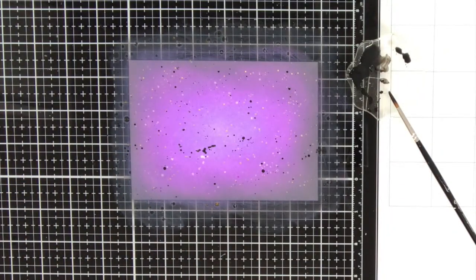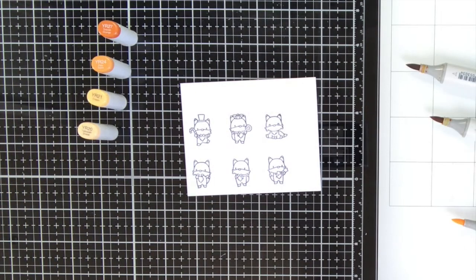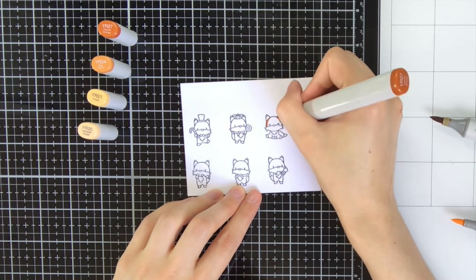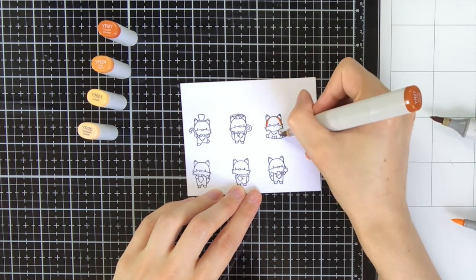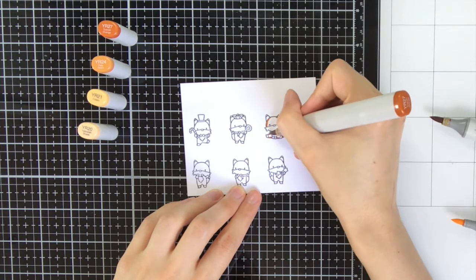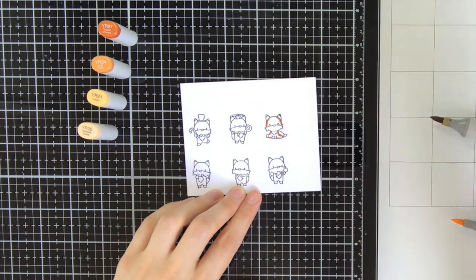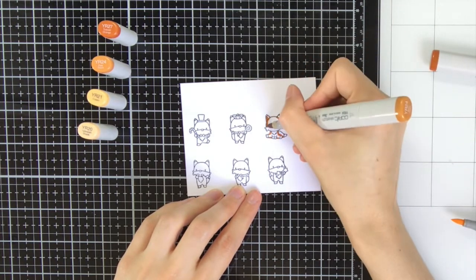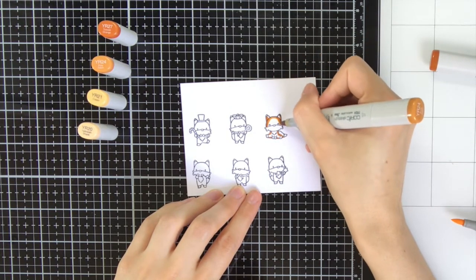Off camera I have also added some gold splatters to the background, but I will later show you how I created the gold splatters because I did the same with the sentiment for the card. So now the background is done and I set it aside to dry, and in the meantime I'm working on the Copic coloring of the little foxes.